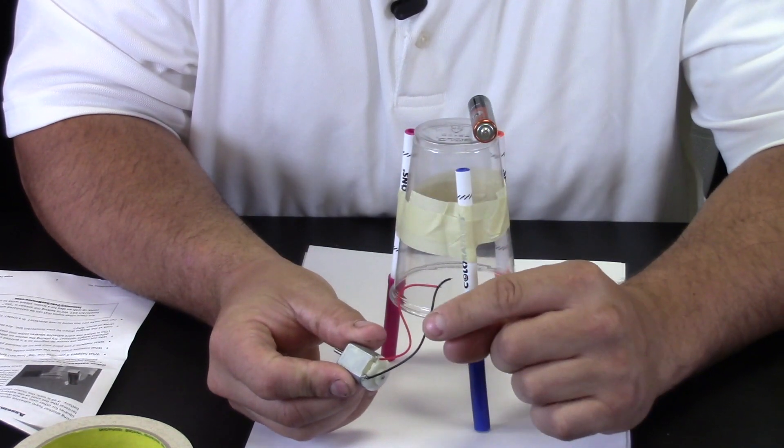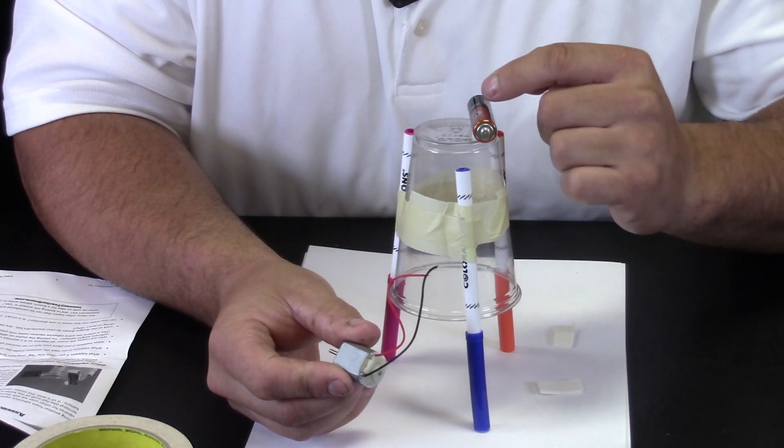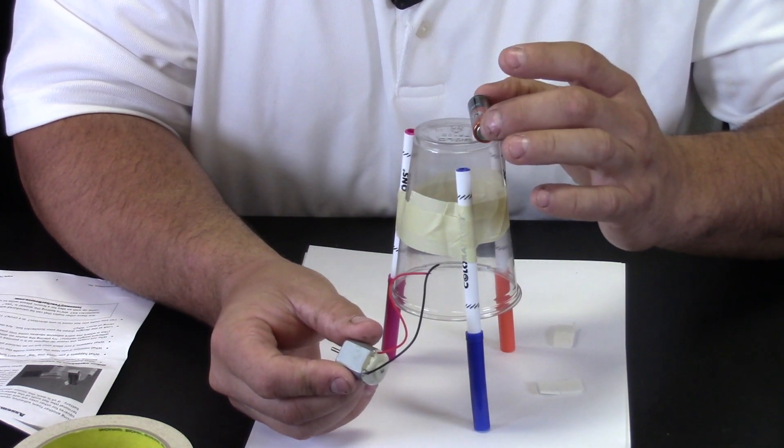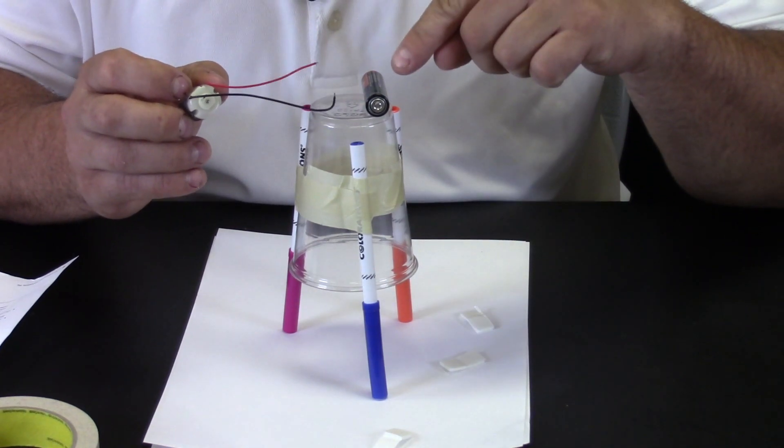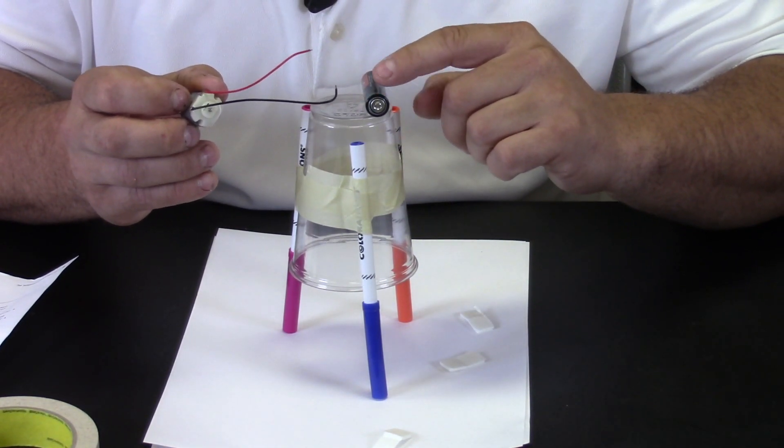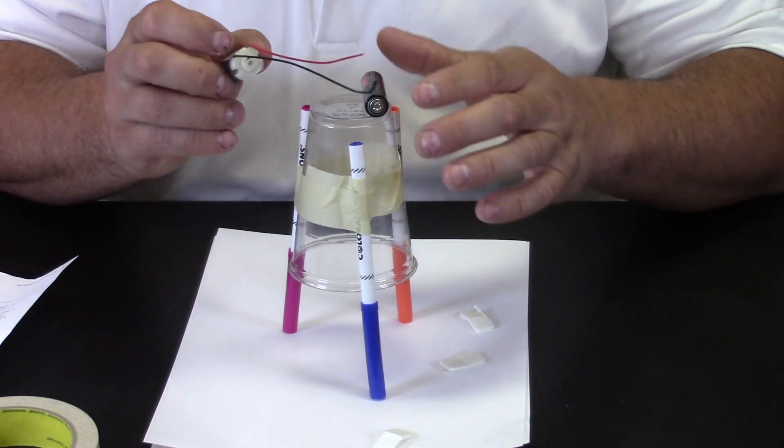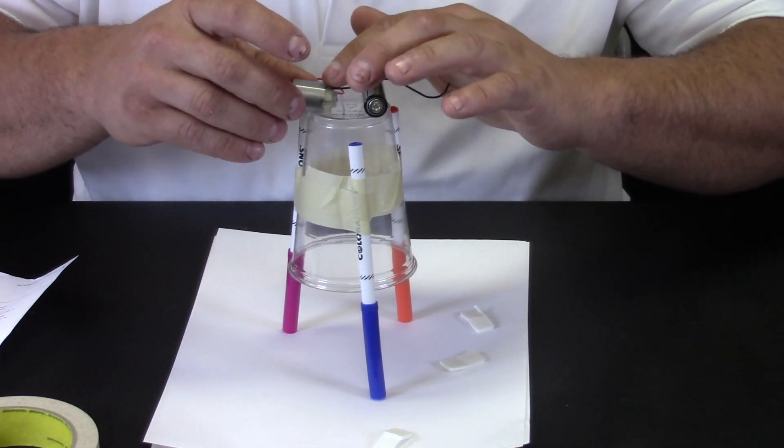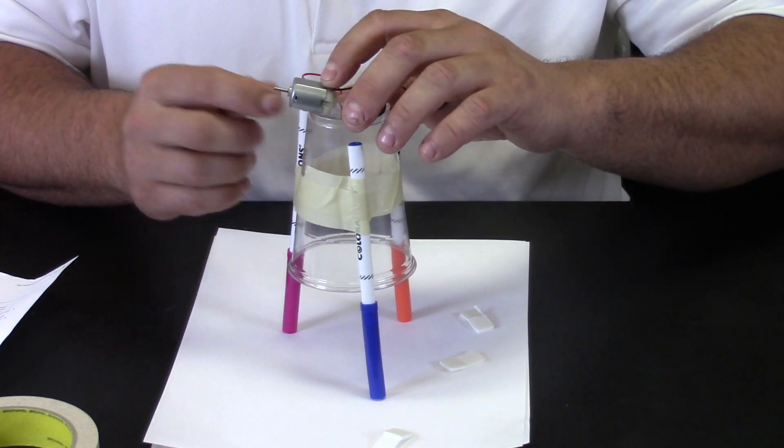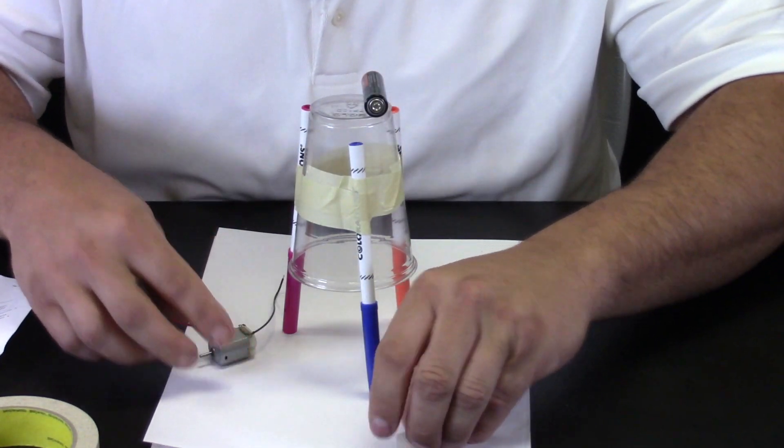Now it's really important to look at the color of the wires and make sure they line up with the poles of the battery. So to hook up our motor, I want to make sure the black wire is going to my negative side of the battery and my red wire is going to go to my positive side of the battery. Now I first have to attach the motor to the top of the cup, so I'm going to use another sticky tab to do that.